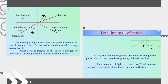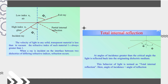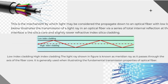Total internal reflection. When a ray is incident on the interface between two dielectrics of differing refractive indices, refraction occurs. At angles of incidence greater than the critical angle, the light is reflected back into the originating dielectric medium — this behavior is termed total internal reflection, where the angle of incidence equals the angle of reflection. This is the mechanism by which light propagates down an optical fiber with low loss. The transmission of a light ray occurs via a series of total internal reflections at the interface of the silica core and the slightly lower refractive index silica cladding. The light ray shown is known as a meridional ray as it passes through the axis of the fiber core.